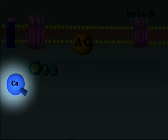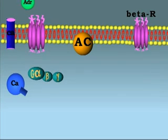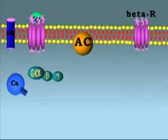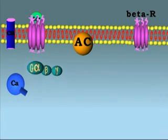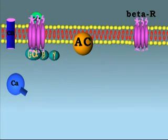Here, first adrenaline binds to the beta-adrenergic receptor on the cell surface, inducing a conformational change which permits interaction of the G-protein binding site with the stimulatory G-protein.